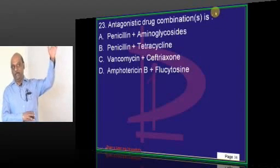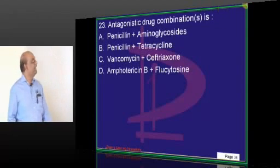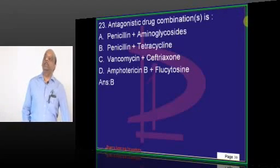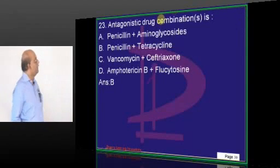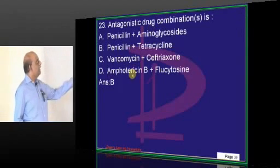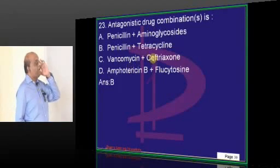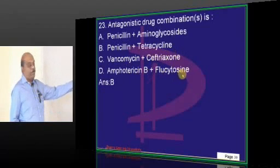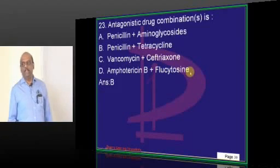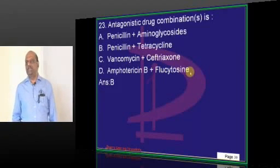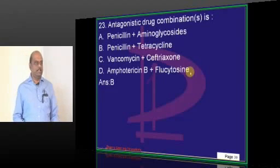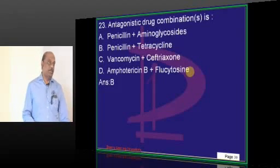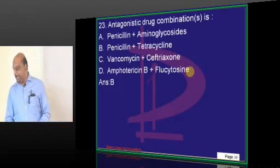An antagonistic drug combination is penicillin and tetracycline, whereas amphotericin B and flucytosine are generally used together as antifungals and their combination is synergistic — that is what you need to basically remember.